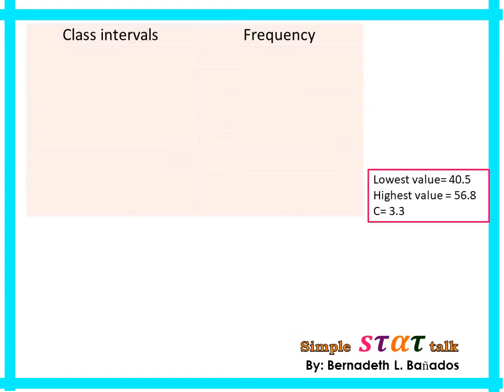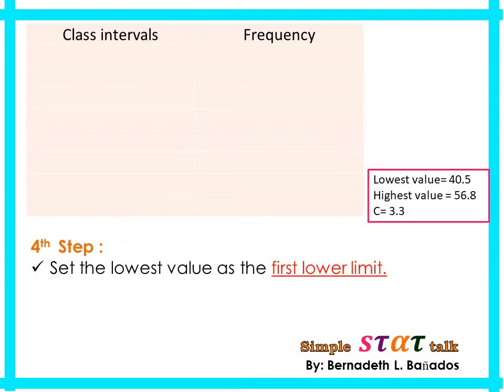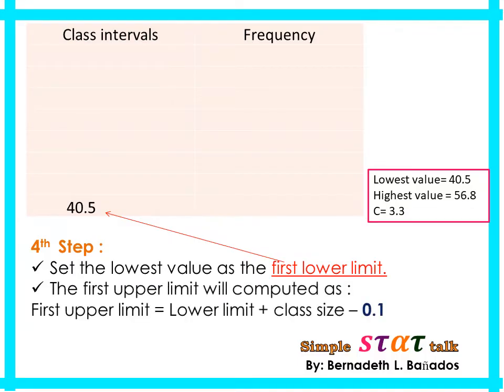For the fourth step, we construct a two-column table: one for class intervals and one for frequency. Note three values: the lowest value is 40.5, the highest is 56.8, and the class size is 3.3. We start from the lowest value as our first lower limit, so the first lower limit is 40.5. To obtain the first upper limit, use: lower limit plus class size minus 0.1.